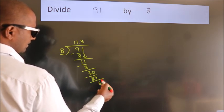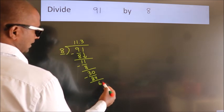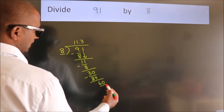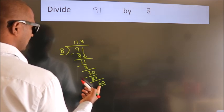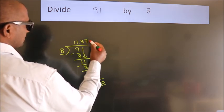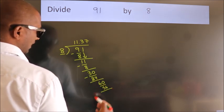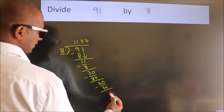After this, we already have the decimal. So, directly take 0. So, 60. A number close to 60 in 8 table is 8 sevens, 56. Now, we subtract. We get 4.